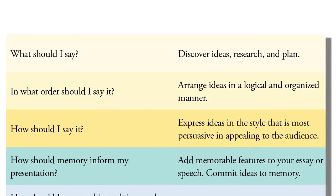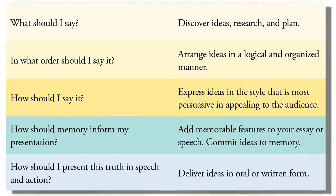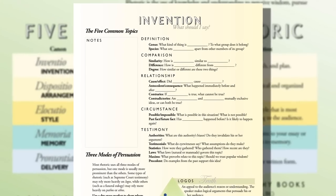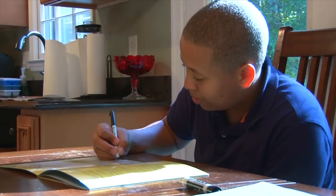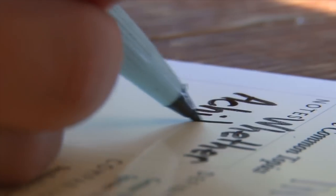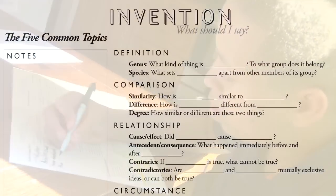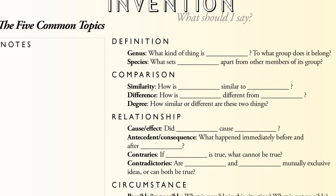The Rhetoric Trivium Tables walk your student through each canon with guiding questions and actions. We begin with the canon of invention, or coming up with what to say. As an example, say the student is writing an essay on whether Achilles should have abandoned the Greeks at the beginning of the Iliad. All he needs to begin with is a question: should Achilles have abandoned the Greeks? The student completes the five question types provided with a dry erase marker, adding any extra thoughts in the notes section.